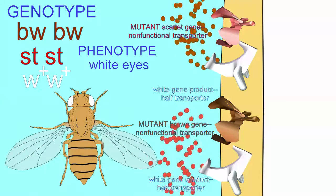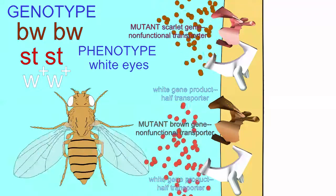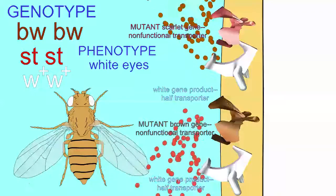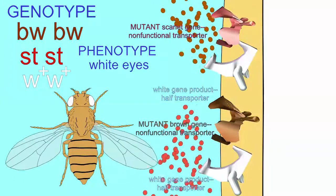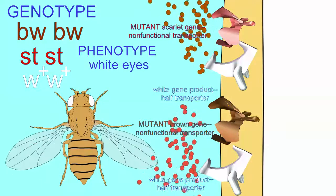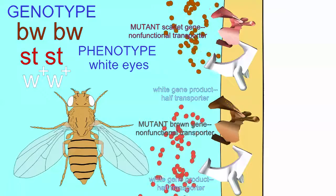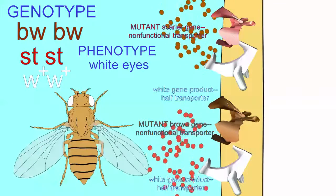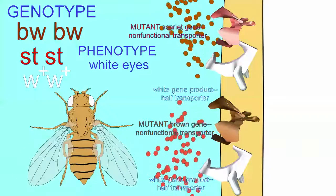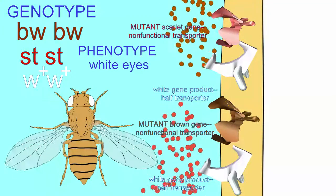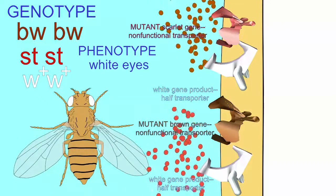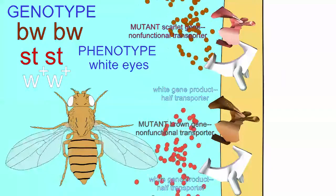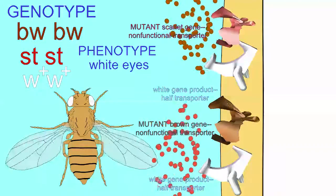I also have white eyes, but not because my white gene has mutated. I have two homozygous recessive mutations, one for the brown gene and one for the scarlet gene. So because I am homozygous recessive for a mutation in brown, I cannot pump scarlet pigment.